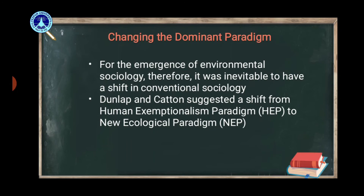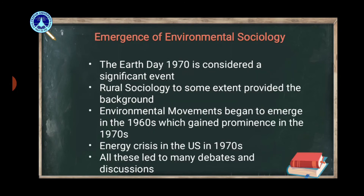This new ecological paradigm gives full emphasis to environmental variables and states that although human beings have innovative capabilities, they are still dependent on their ecosystem. Coming to how environmental sociology emerged — the Earth Day of 1970 is considered a very significant event, as it paved the way for modern environmentalism and led to the emergence of environmental sociology.